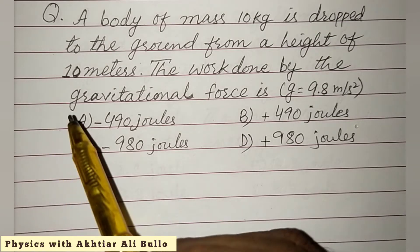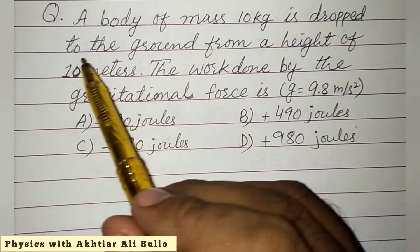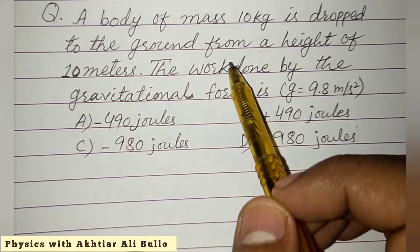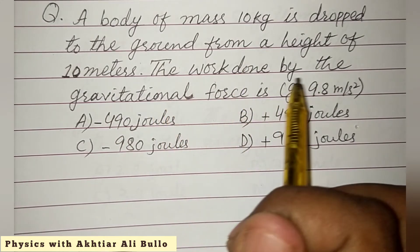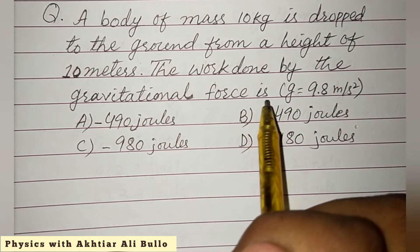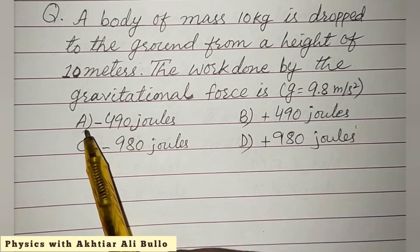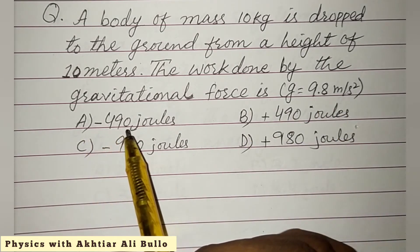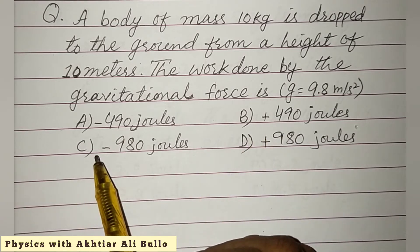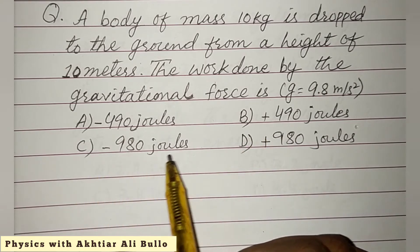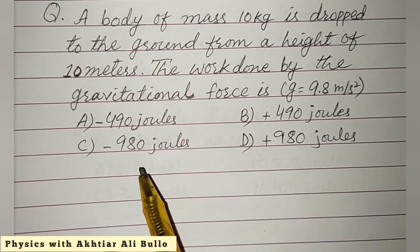The question is: a body of mass 10 kg is dropped to the ground from a height of 10 meters. The work done by the gravitational force is, as G is given as 9.8 meters per second squared: A) minus 490 joules, B) plus 490 joules, C) minus 980 joules, D) plus 980 joules.